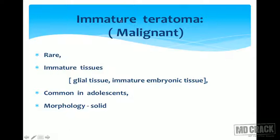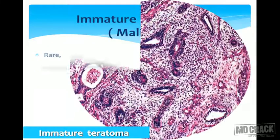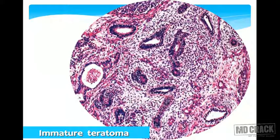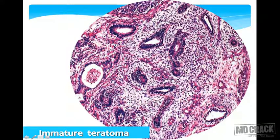Immature teratoma is a malignant tumor, rare, most commonly containing glial tissue as a component with immature embryonic tissues. It is commonly seen in adolescents and is morphologically solid rather than cystic. Microscopically, extensive glial tissue — immature, blastema-appearing — is characteristic. When we see glial tissue extensively, we name it as immature teratoma.